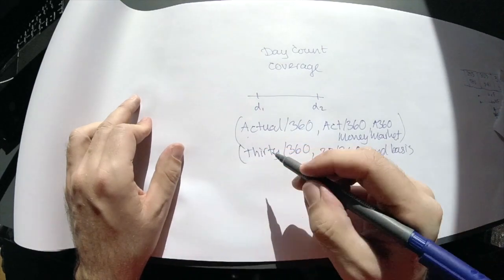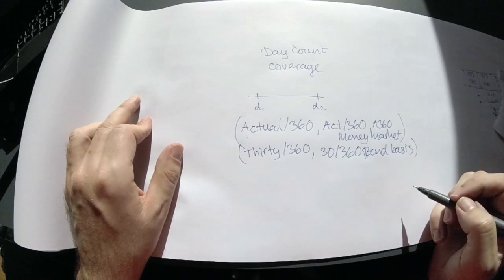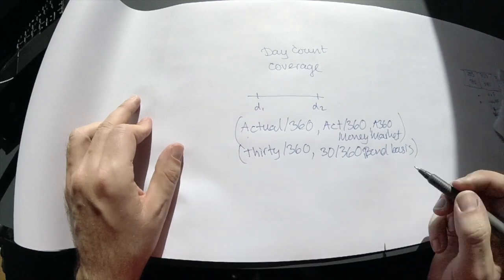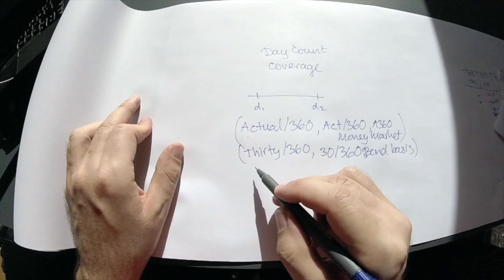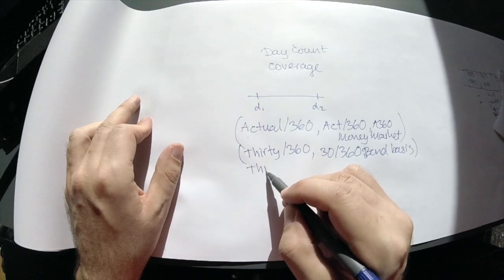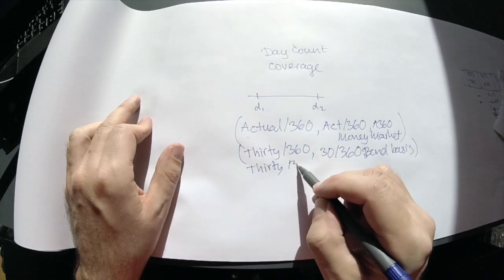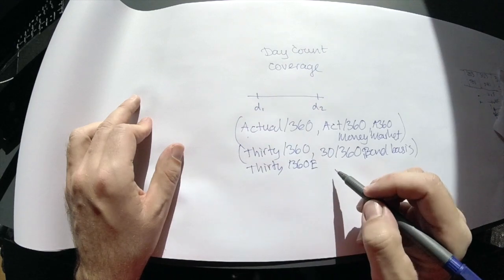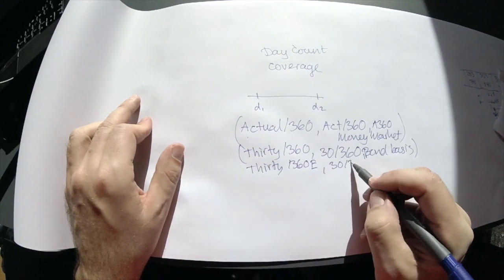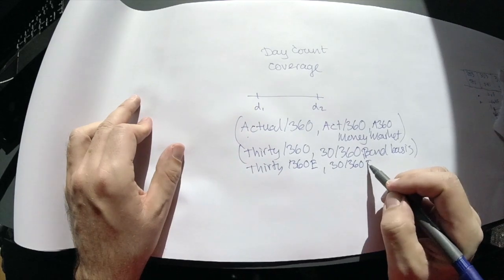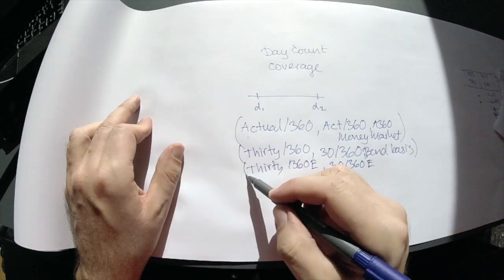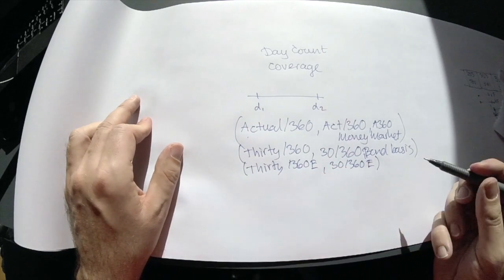Most likely because it's used in a lot of cases for bonds. There's a slight variation on that one. There's actually a 30/360 European version, or 30/360 E. There's a technical minor difference between those two, but in spirit they're quite close.